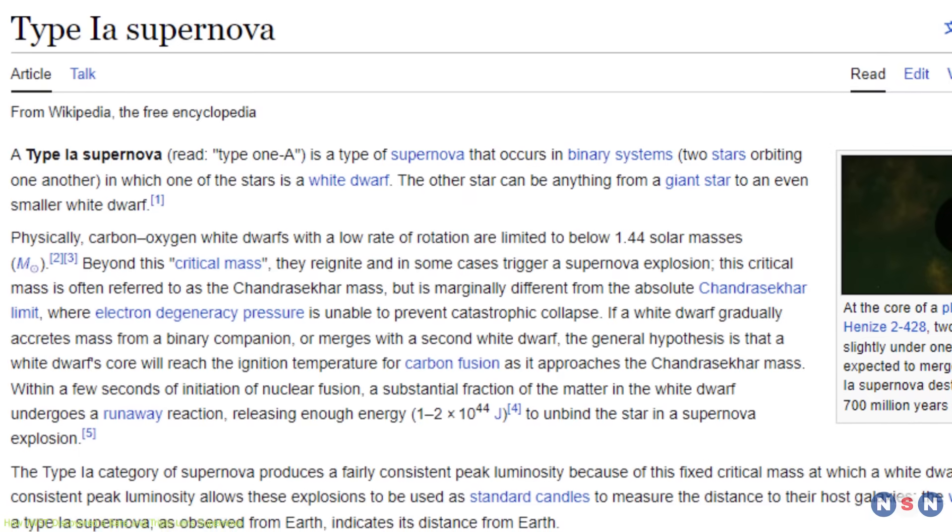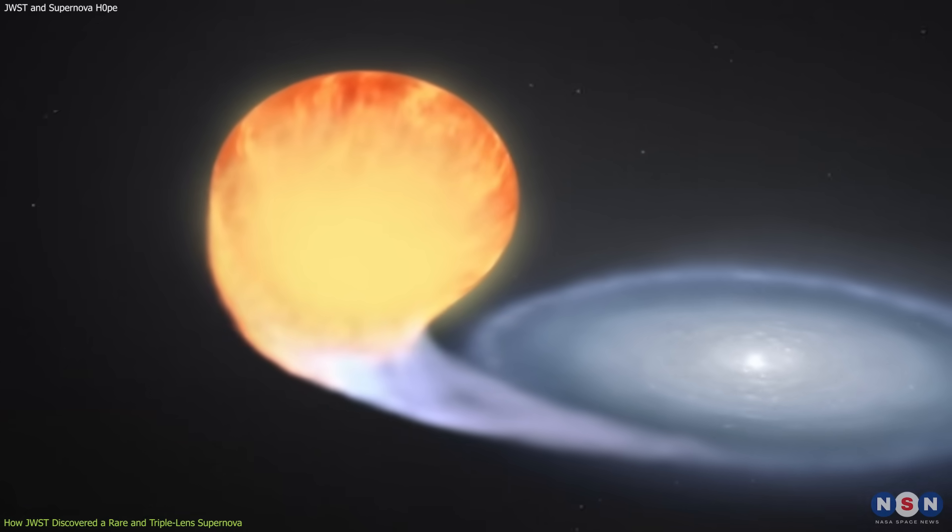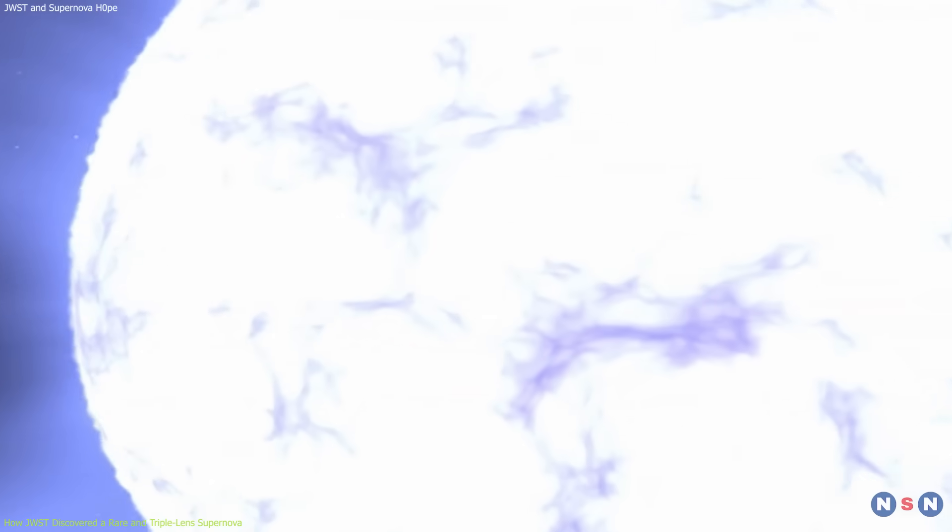This flash was a Type Ia supernova, which is a type of exploding star that occurs when a white dwarf star accretes too much mass from a companion star and reaches a critical point.